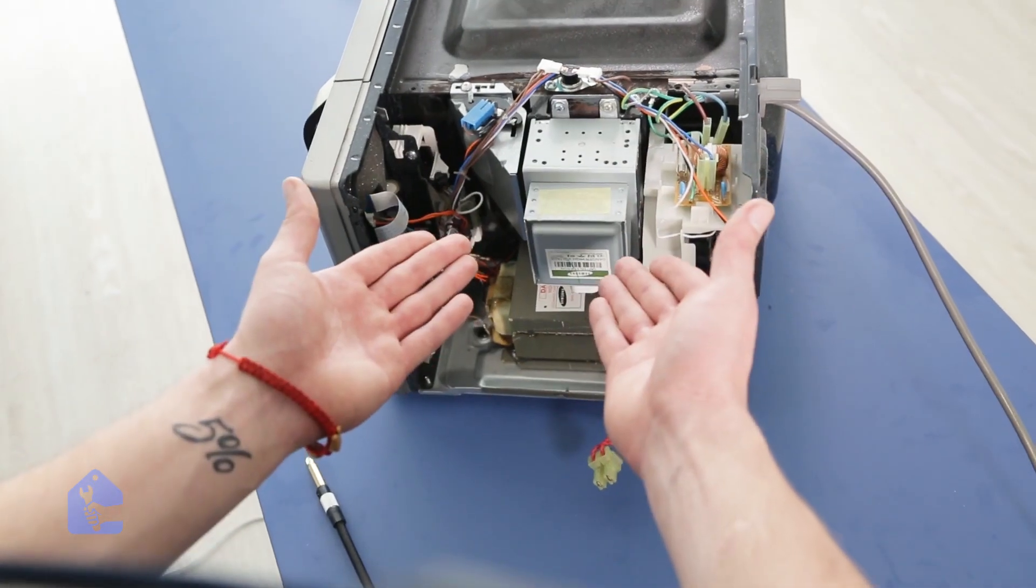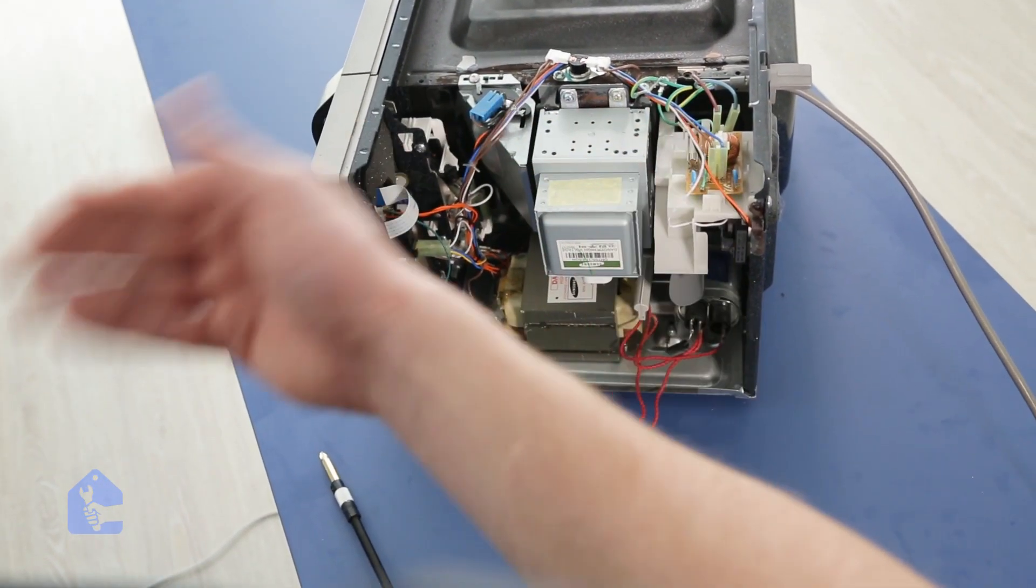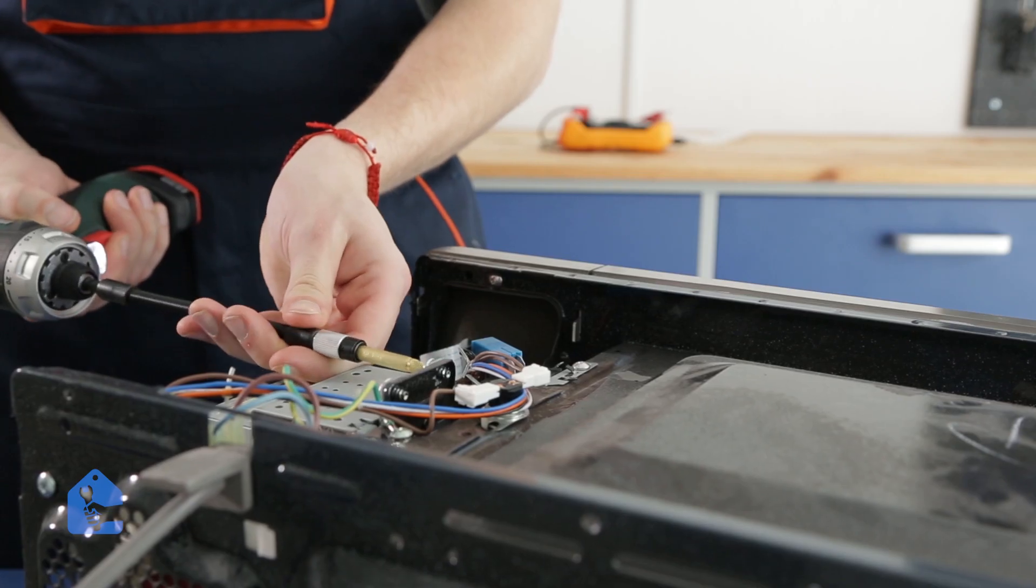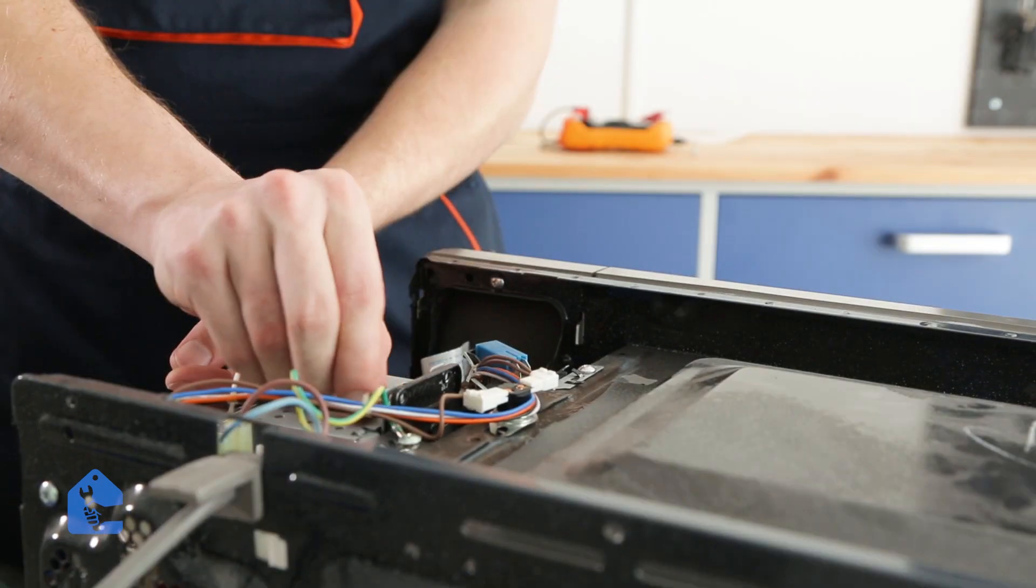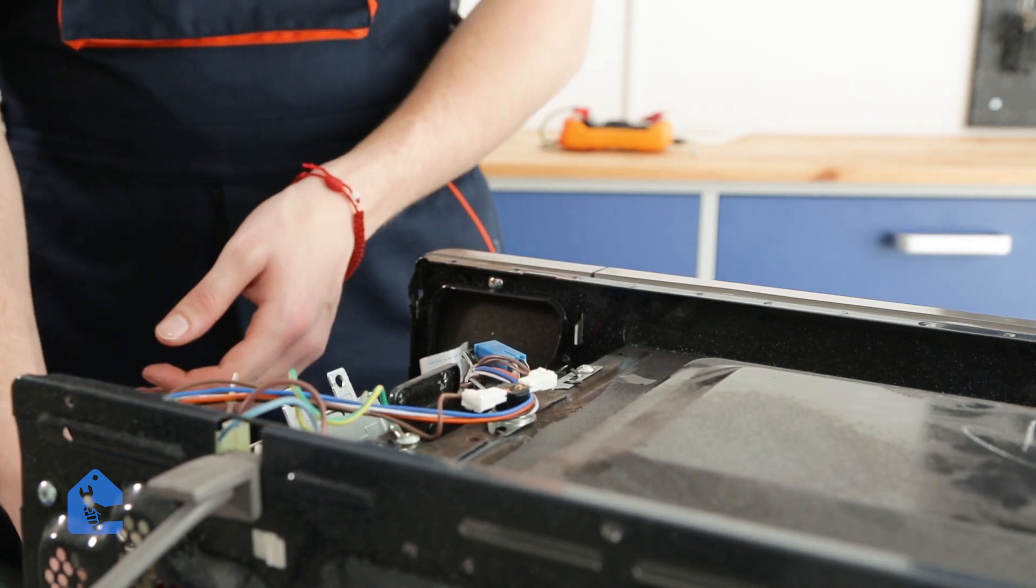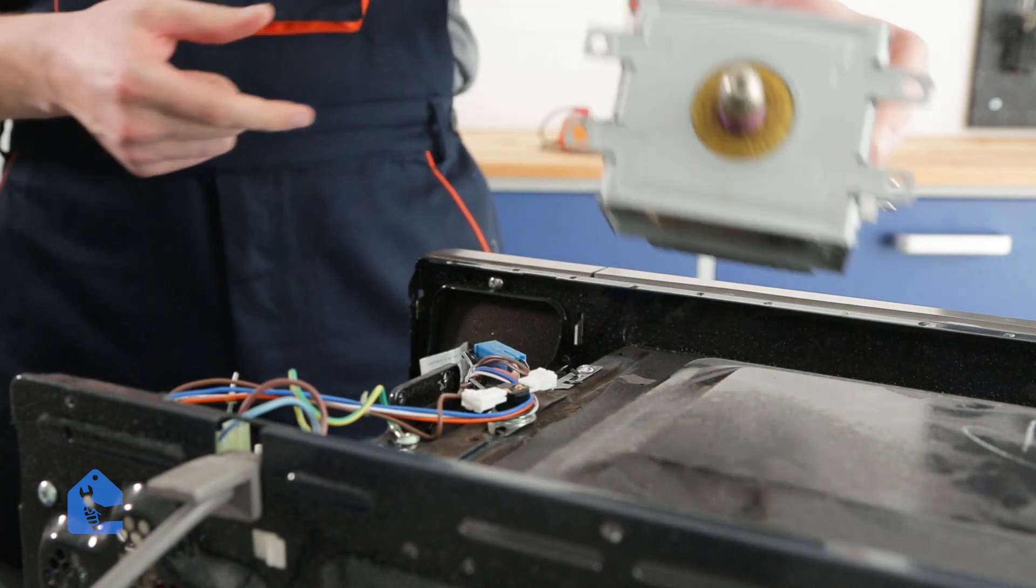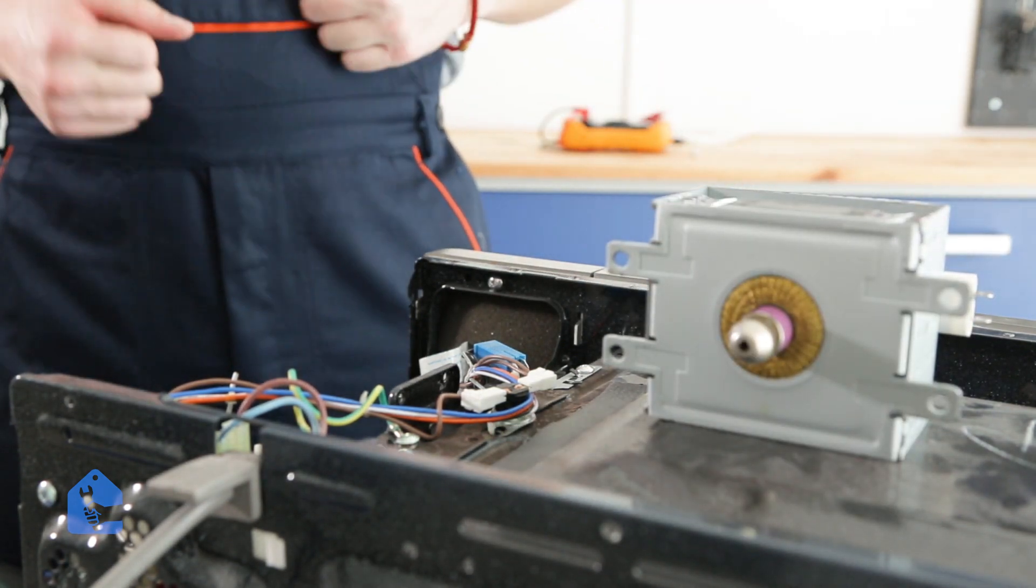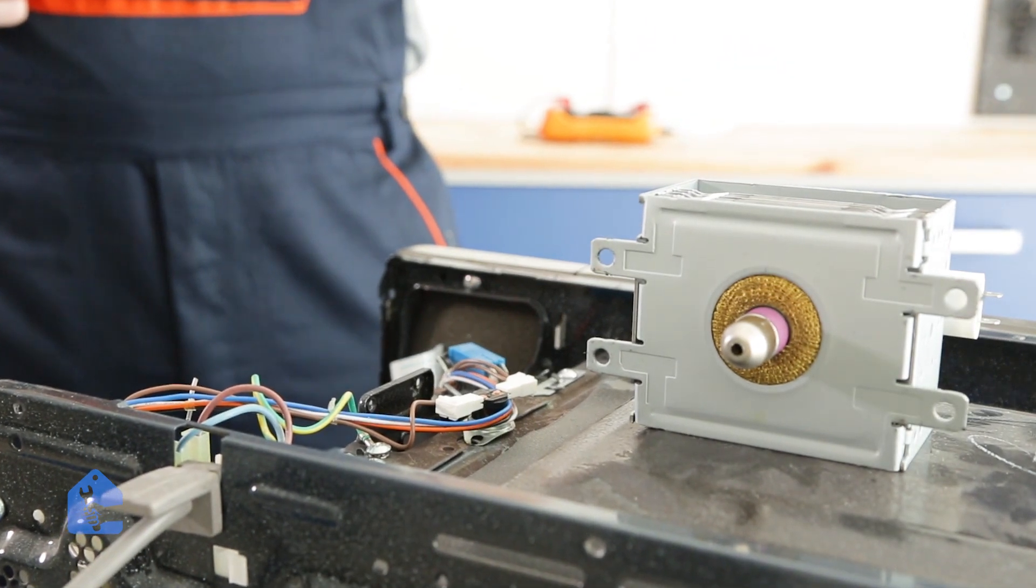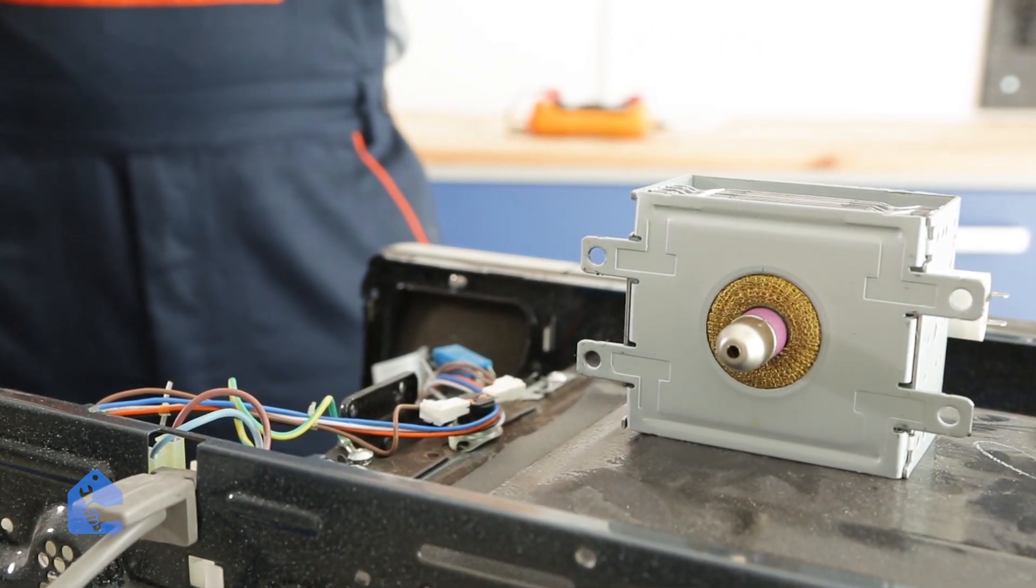Perfect, now we have to unscrew the two screws on top and remove the magnetron out of its way. Once the screws are out, you can remove the magnetron out of its housing.